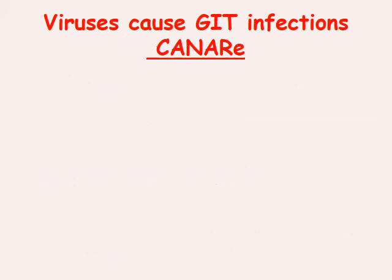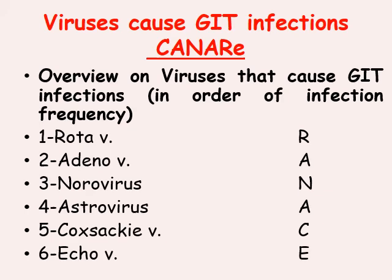Now, here is a table that includes all the viruses in order of importance from most common to least common — we covered them all in previous lectures. First: rotavirus. Second: adenovirus. Third: norovirus. Fourth: astrovirus. Fifth: coxsackieviruses. Sixth: echoviruses. Numbers five and six are among the picornaviruses. These are abbreviated into a word called CANARY.